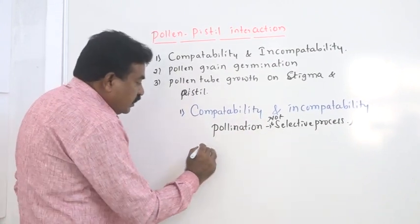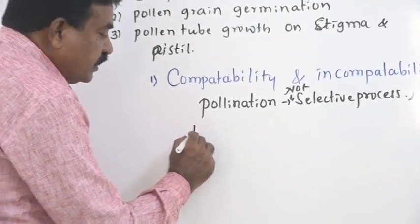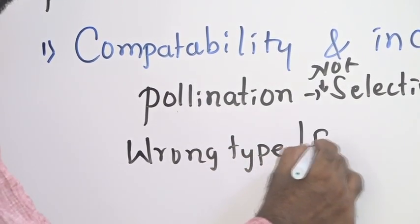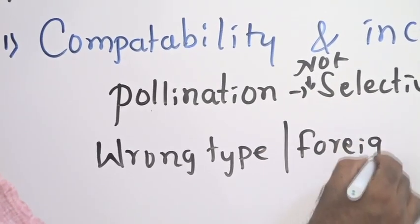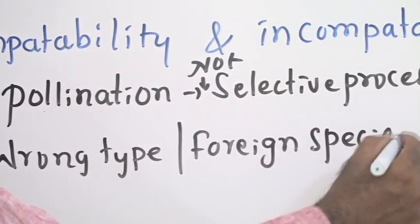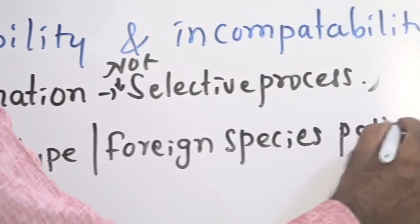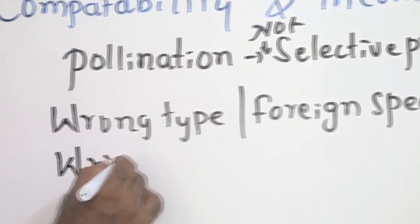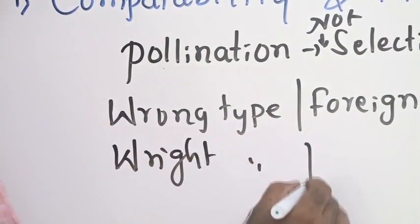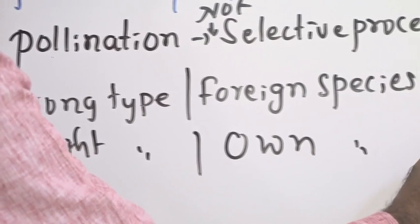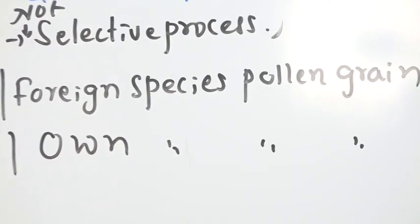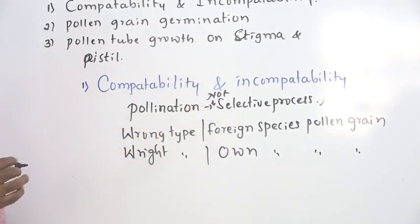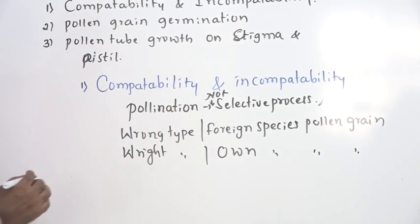Hence, during pollination there may be a wrong type — a foreign species pollen grain may be deposited — or there may be a right type, meaning the own species pollen grain may be deposited. Based on that, a compatibility or incompatibility process will be involved.